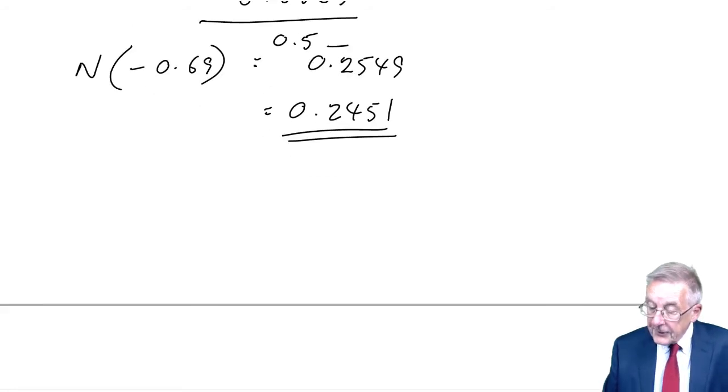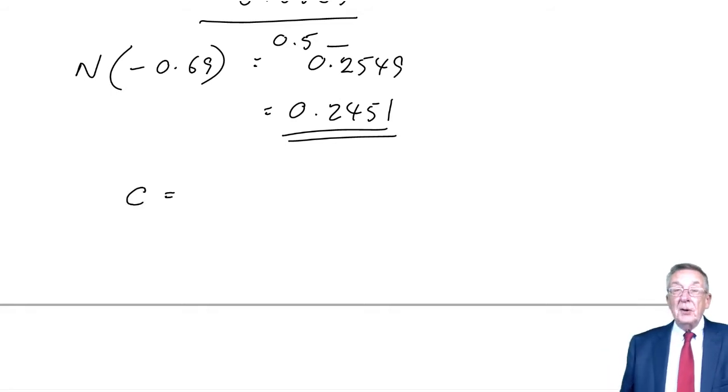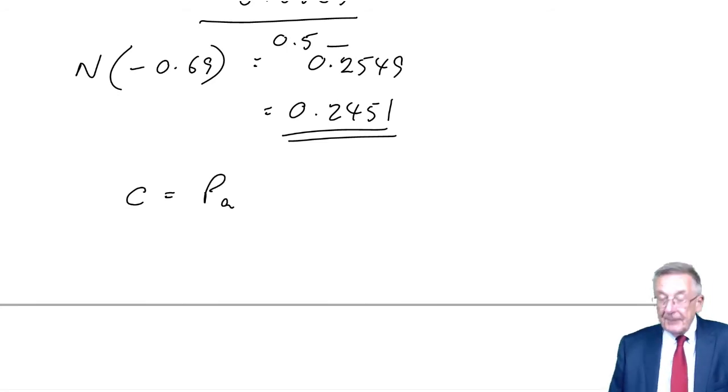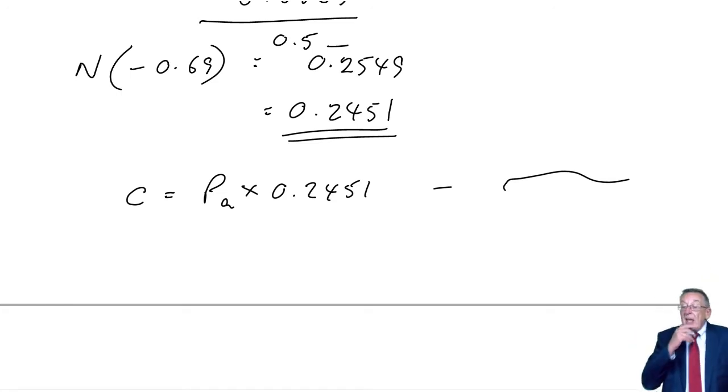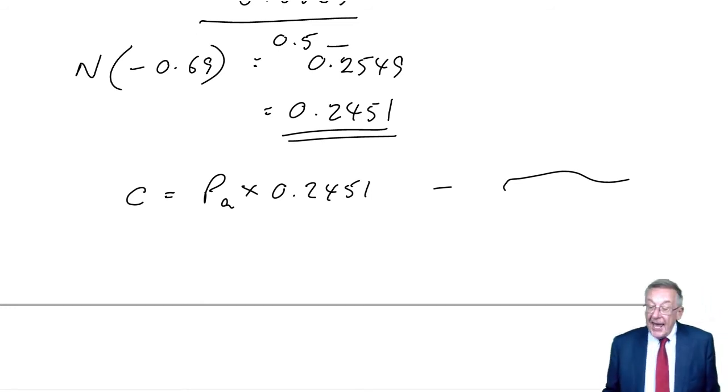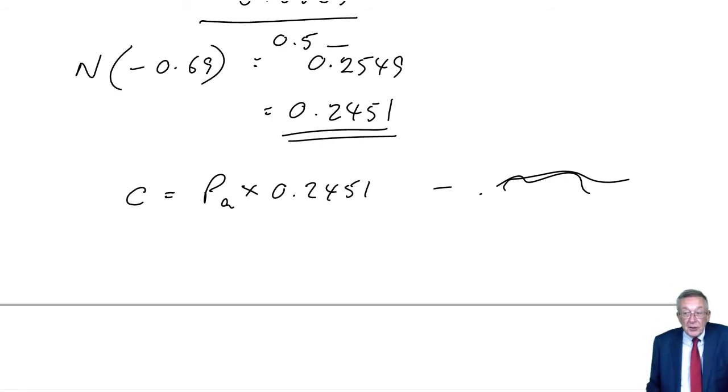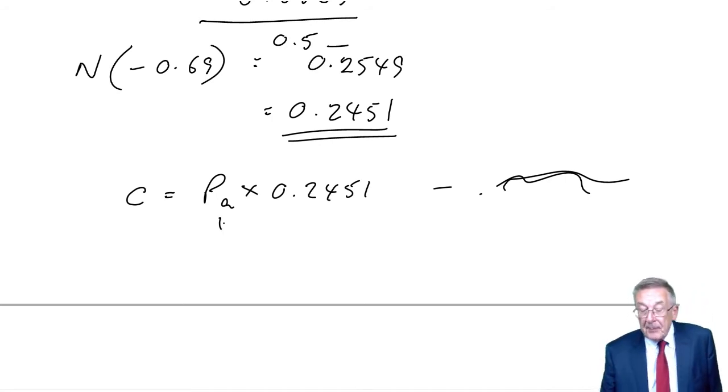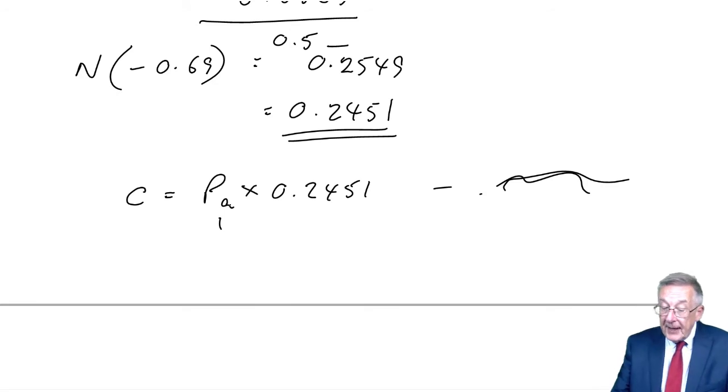The price of the call option will be the share price times N(D1) minus all that extra bit. If we assume that everything else is going to be unchanged, then as the price of the share changes, so too the option price will change. If the share price fell by 10 cents, the option price will fall by 10 cents times 0.2451.